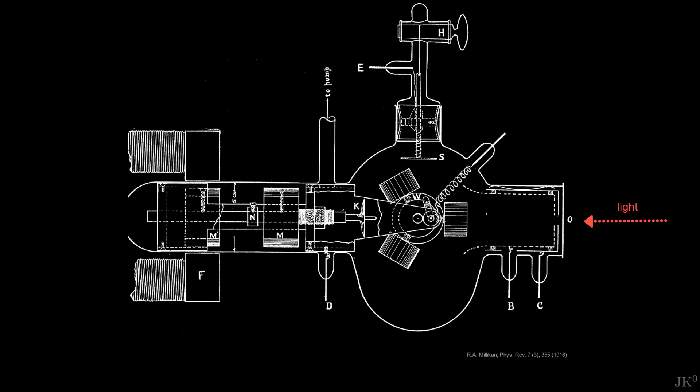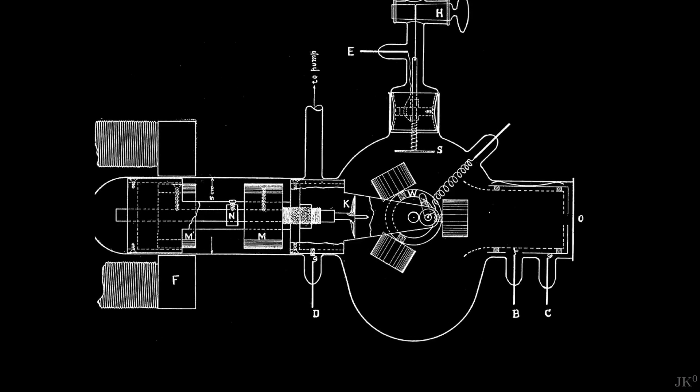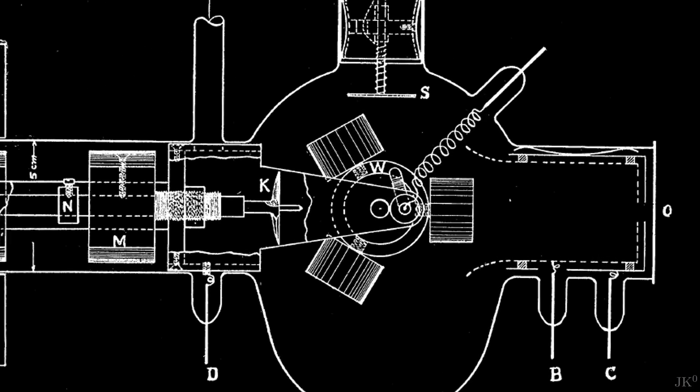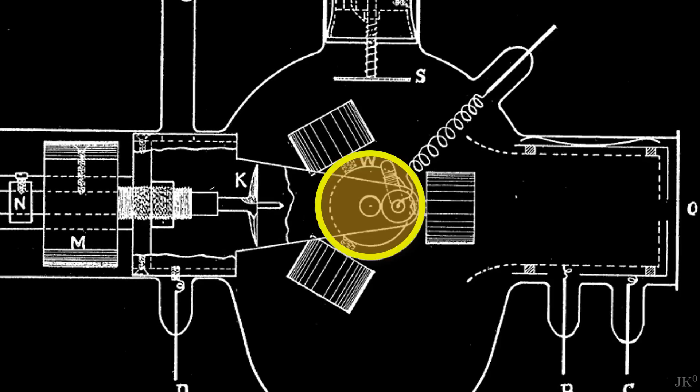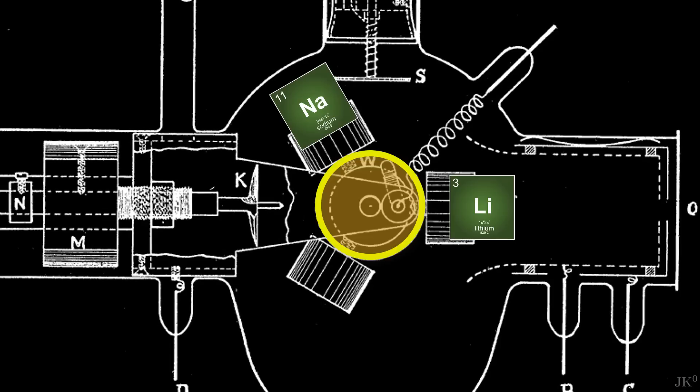Millikan's graduate students Albert Henning and W.H. Kaddish helped him build several advanced versions of Lenard's experiments using a powerful mercury lamp and carefully crafted filters to precisely select the frequency of light to shine over different metals. He also incorporated a rotary wheel containing three different metals to be tested: lithium, sodium and potassium.